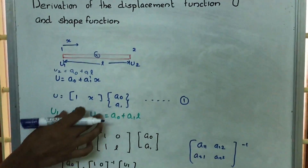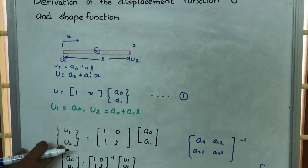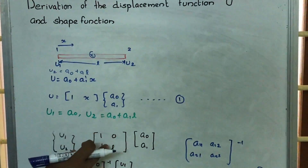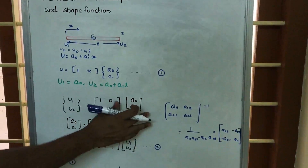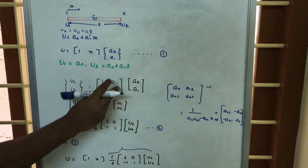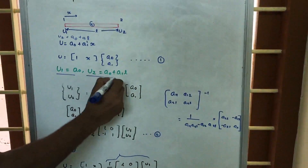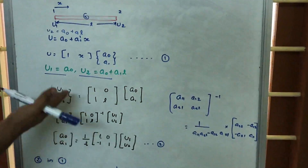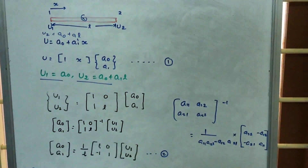We write this in matrix form as [u1, u2] = [[1, 0], [1, L]] * [a0, a1]. When we multiply this out, we get those two equations. This is just representing those two equations in matrix form.